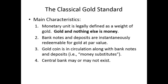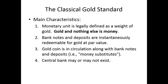Let's talk about the classical gold standard, which had some government interference. Under the classical gold standard, the monetary unit is defined as a weight of gold. Gold and nothing else serves as money. Bank notes and deposits, to the extent that they exist — and they can certainly exist under a 100% gold standard or even under a classical gold standard — are instantaneously redeemable on demand for gold or silver.